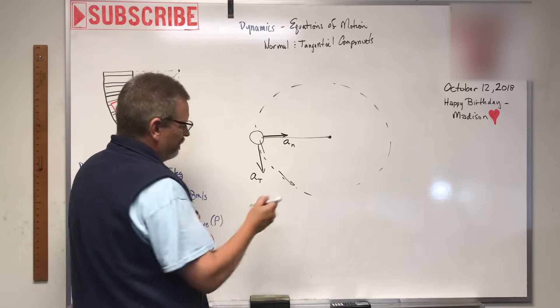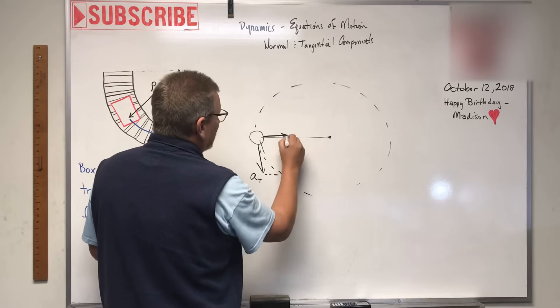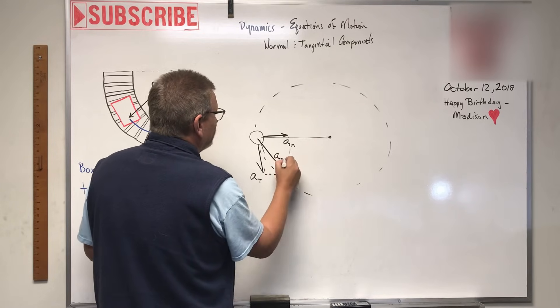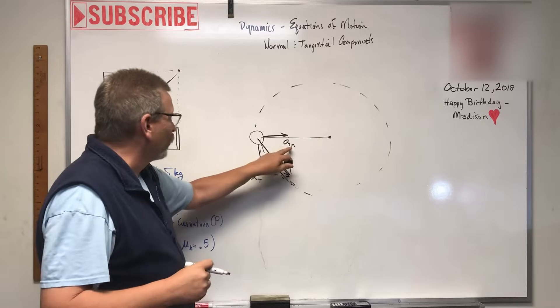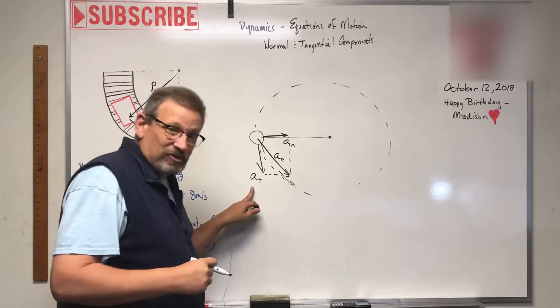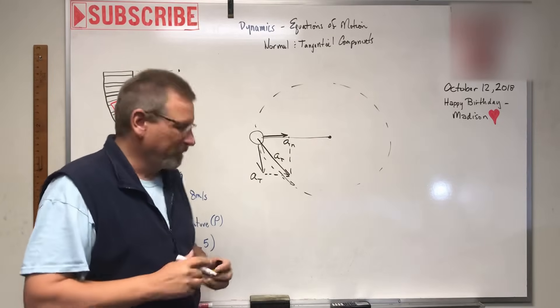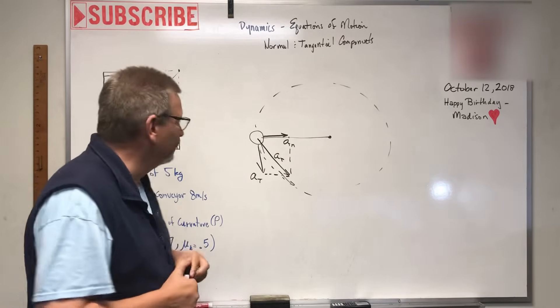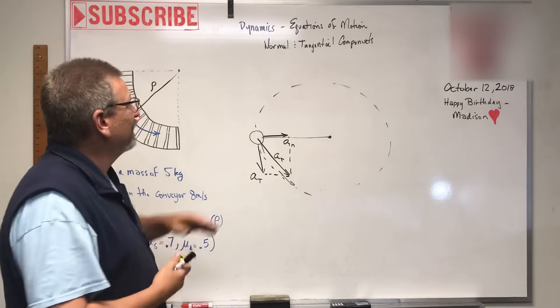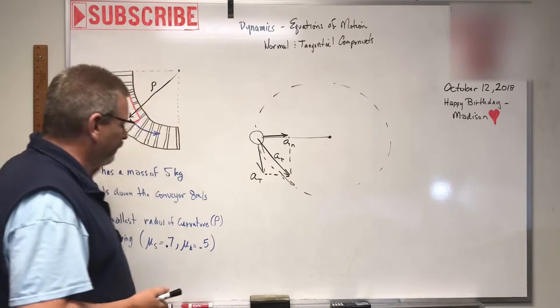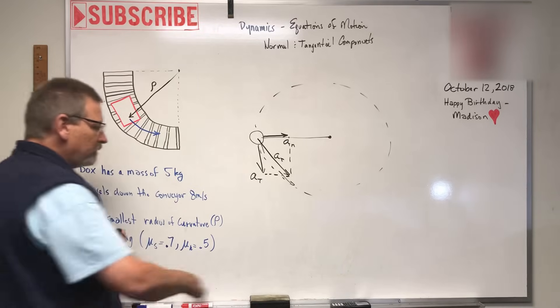We know that acceleration has two components. If we wanted to, we can find the resultant acceleration by doing the square root of a_normal squared plus a_tangential squared. We've talked about that before in previous videos, but we're going to talk about it again when we discuss equations of motion for bodies.